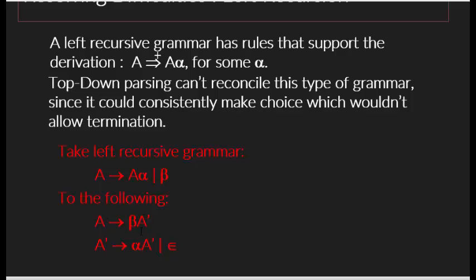A-prime goes to alpha A-prime or epsilon. Alpha is whatever follows after the leftmost symbol — it could be two or three terminals or variables. Beta is everything after the arrow symbol. If you don't have anything after the arrow symbol, you can take epsilon as beta.